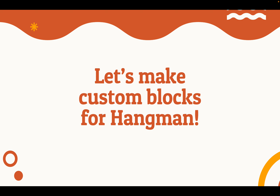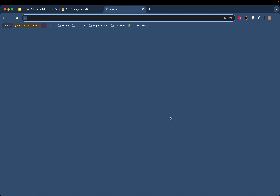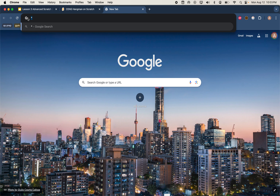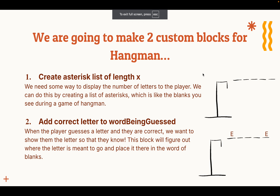So let's make our own custom blocks for Hangman. We're going to make two custom blocks. The first is 'create asterisk list of length x.' We need some way to display the number of letters to the player, and we can do this by creating a list of asterisks. In a game of Hangman, you put in blanks and they have to guess each letter — we're going to use asterisks instead of blanks because that's just easier. An asterisk is basically just this symbol over here.